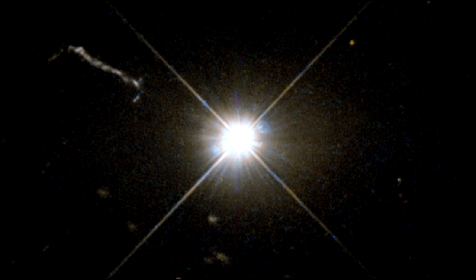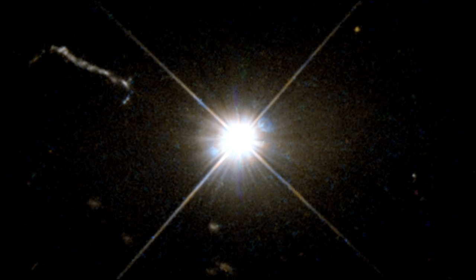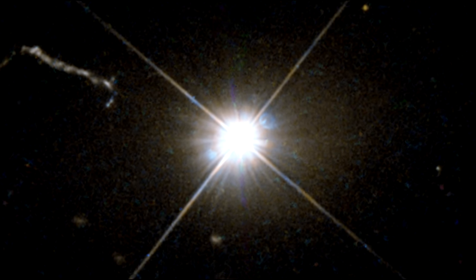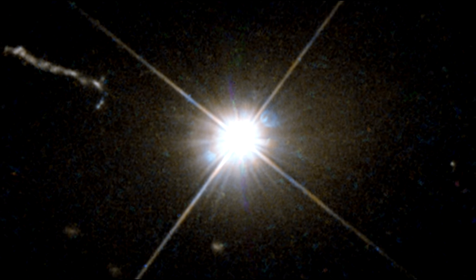Despite its great distance, 3C273 is still one of the closest quasars to our home. It was the first quasar ever to be identified and was discovered in the early 1960s.